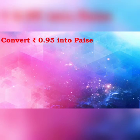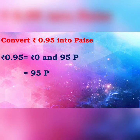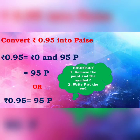Our next question is: Convert Rupees 0.95 into Paise. Rupees 0.95 can also be written as Rupees 0 and 95 Paise. Therefore, our answer is 95 Paise. Shortcut: remove the point and the Rupees symbol, and write capital P at the end. Therefore, Rupees 0.95 is equal to 95 Paise.